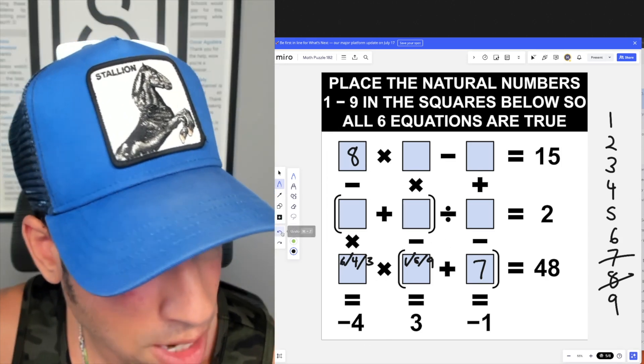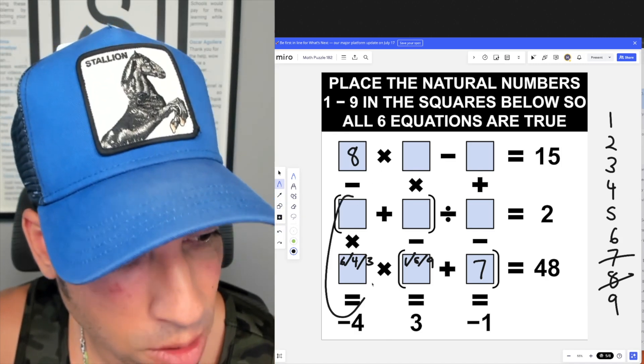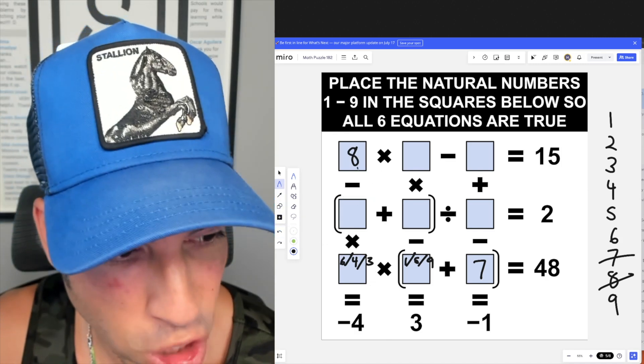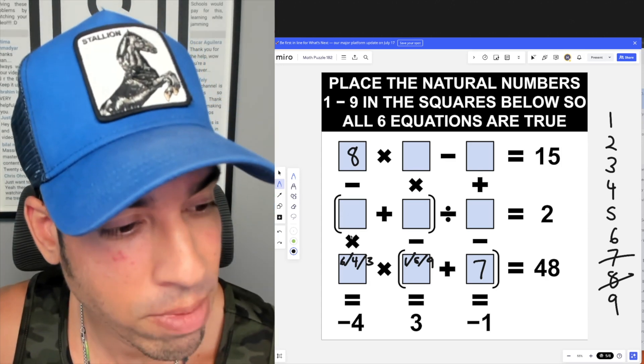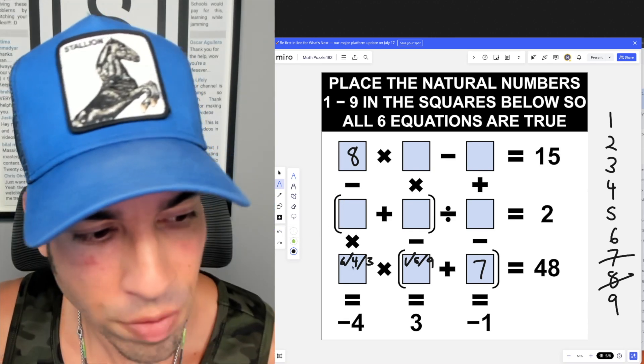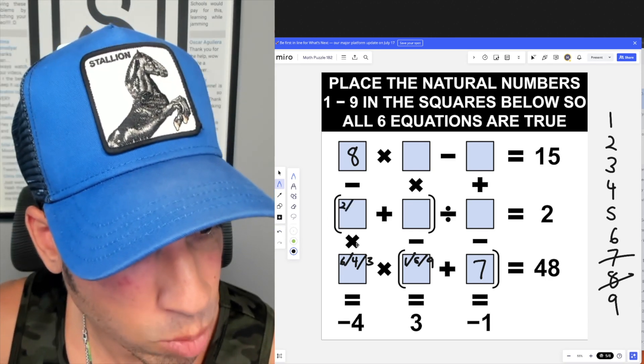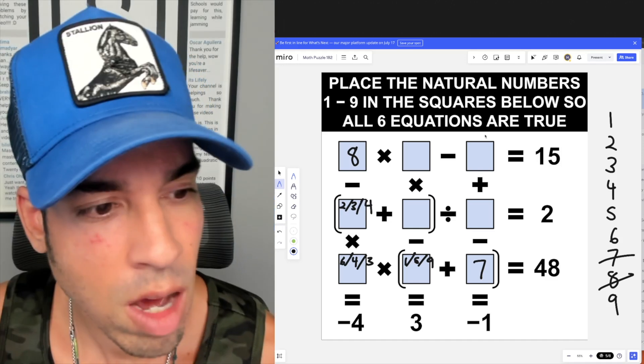Now I know if I'm going to do eight minus something, and remember multiplication is going to come before subtraction, it's going to be eight minus 12. So whatever I have here, it needs to multiply together with this box to give us 12. If I do end up going with a six here, I'm going to have a two. If I end up going with a four here, I'm going to have a three. And with a three here, I'm going to have a four.